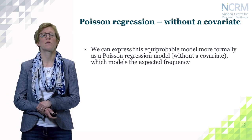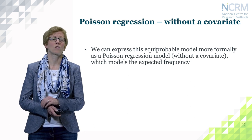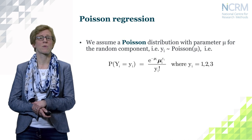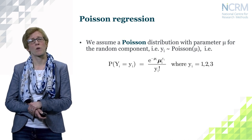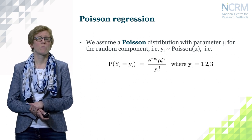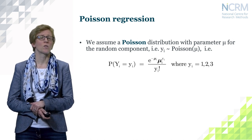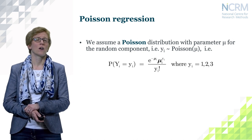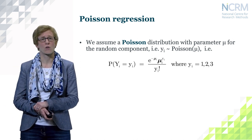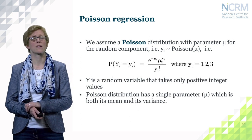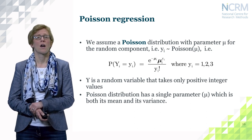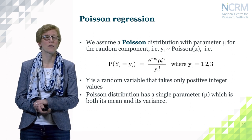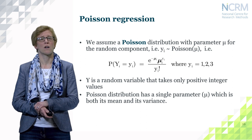We can now express the equiprobable model more formally as a Poisson regression model without a covariate, modelling the expected frequencies. We assume a Poisson distribution with parameter mu for the random component — that means the response variable Y follows a Poisson distribution, using the exponential function formula. The count variable Y takes only positive integer values. This Poisson distribution has only one single parameter, mu, which is both the mean and the variance of the distribution. We assume our outcome follows this Poisson count distribution.